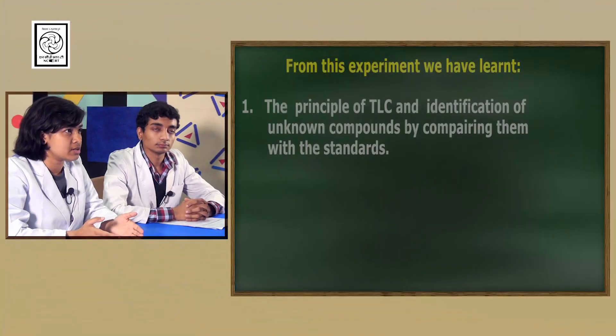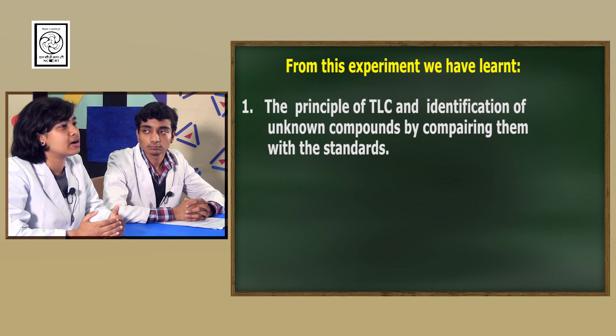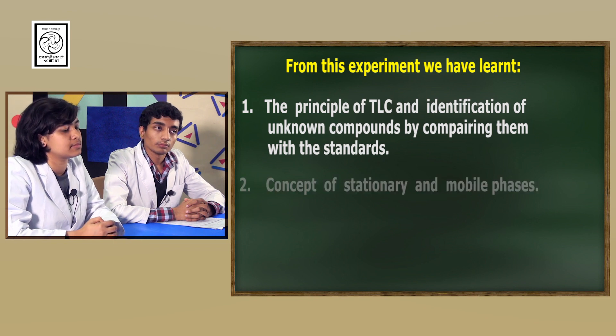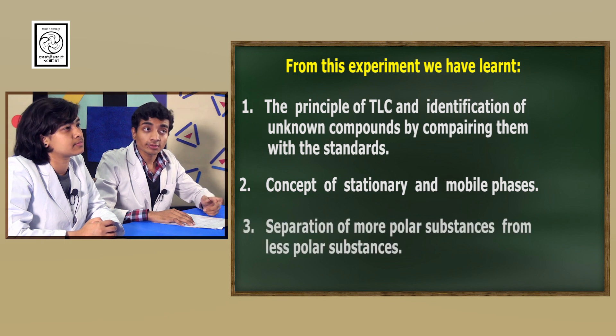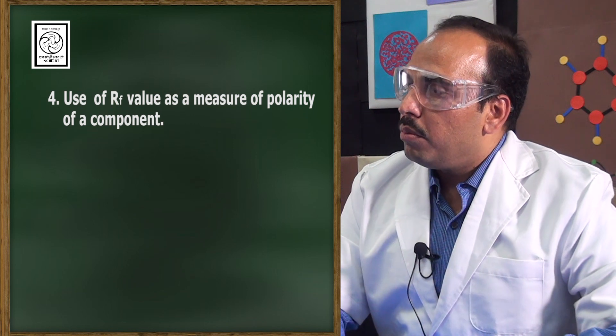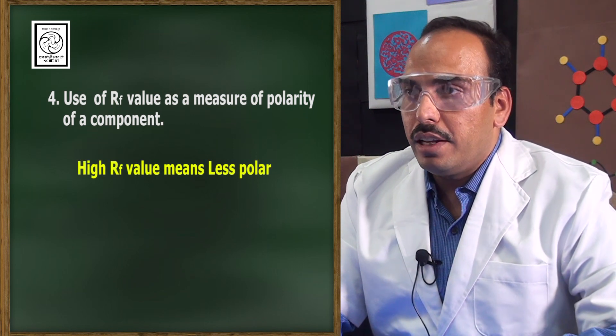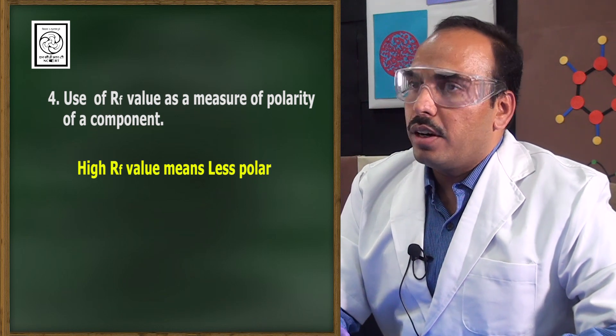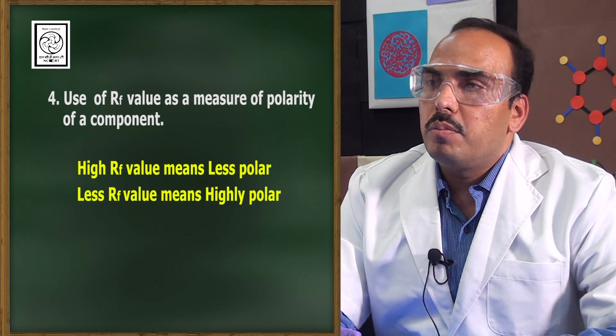What information have you learned from today's experiment? We have learned the principle of TLC, and we have understood that we can identify unknown compounds by comparing them with standards. We have also learned the concept of stationary and mobile phases, and through this technique we can separate more polar substances from less polar substances. We have also learned that we can use the RF value as a measure of polarity — if a component has a higher RF value, it is relatively less polar; if a compound has a lower RF value, it is highly polar. This is how we do this experiment called thin layer chromatography. With that note, we end our today's session. Thank you. Goodbye. Thank you, sir.